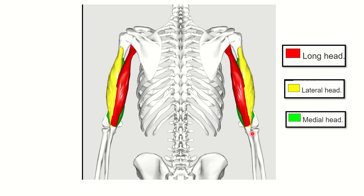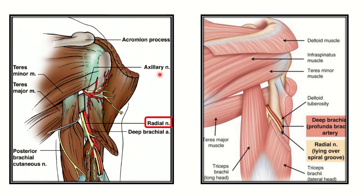The triceps muscle is inserted into the ulna and it causes extension of the elbow joint. In the next picture, we can see the triceps muscle clearly — the long head, lateral head, and medial head. Below the triceps muscle, a nerve and artery are running. The nerve which is very close to the muscle typically supplies the muscle — that is the general rule.